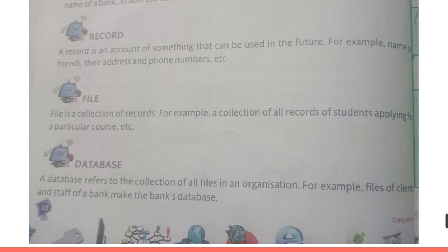If a column is a field, then a row is a record. For example, if the admission number of a person is 1234, the name is Aman, class is ninth, and section is A — then this whole row of data of that particular person makes a record.